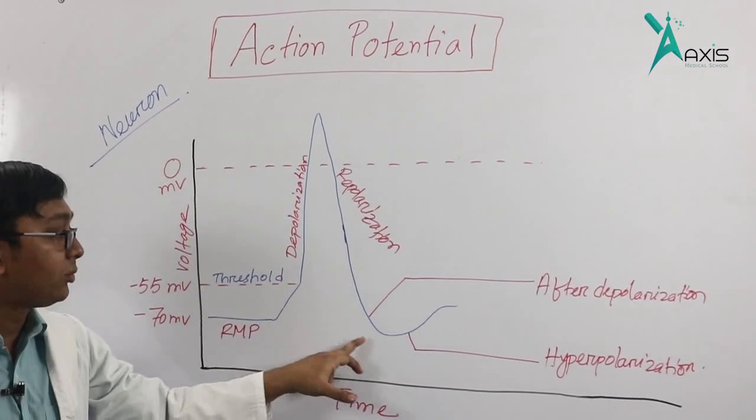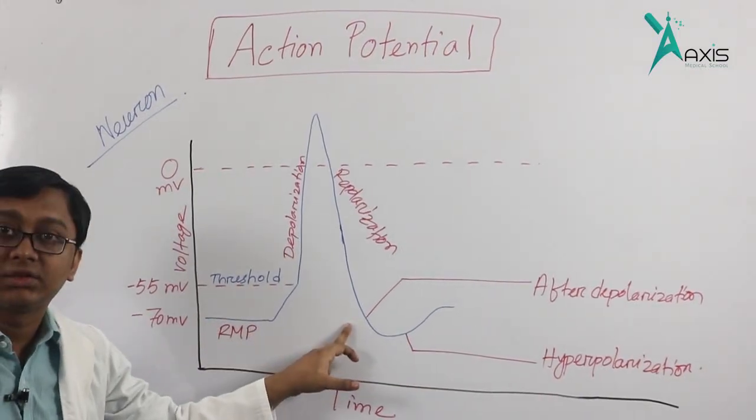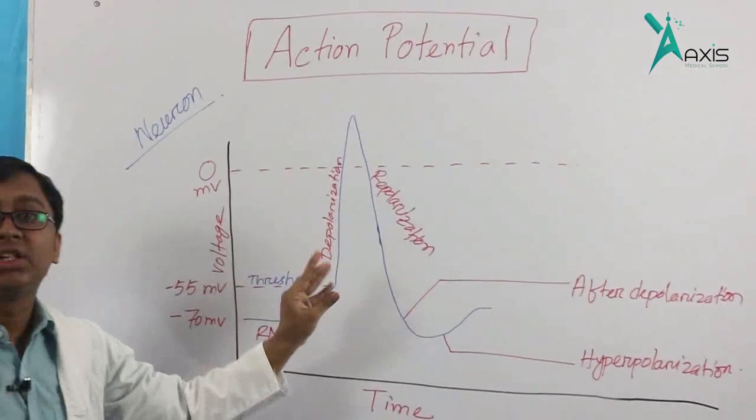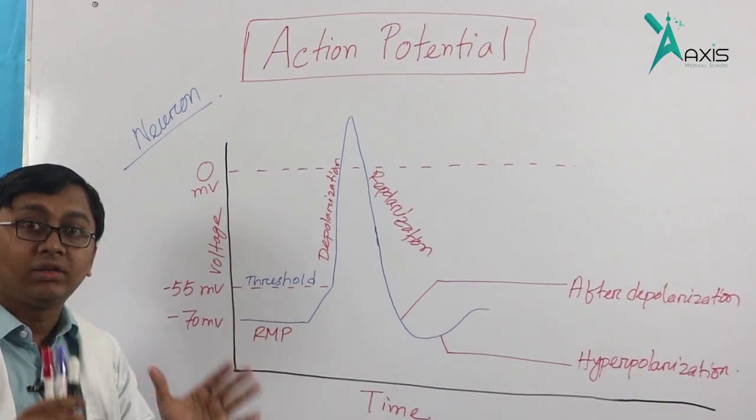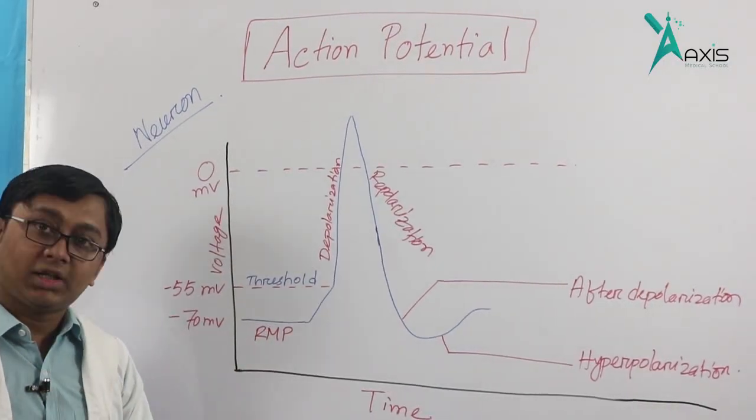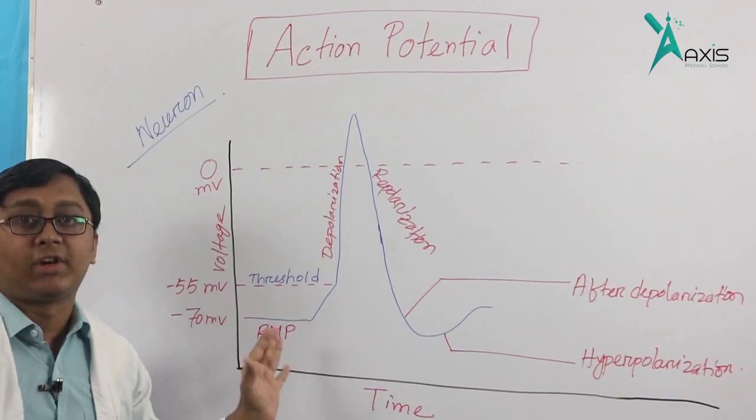Then again it comes back to the resting membrane state. This whole process is called an action potential. Clear? Now, how is it generated?